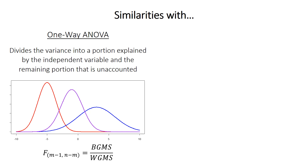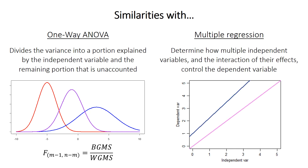A factorial ANOVA has similarities with regular ANOVA, technically called one-way ANOVA, in that both divide the total variance into portions explained by the independent variable — the between-groups mean square — and a remaining unaccounted portion called the within-groups mean square. Statistical significance is the ratio of those two portions. There are also similarities with multiple regression, as both consider multiple independent variables and potentially interactions. The difference is that multiple regression has at least one continuous independent variable, but that difference is smaller than you might guess.